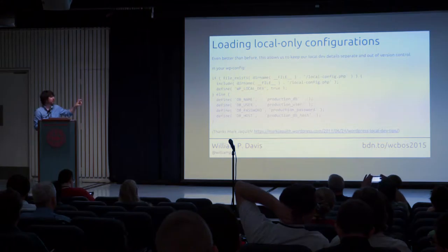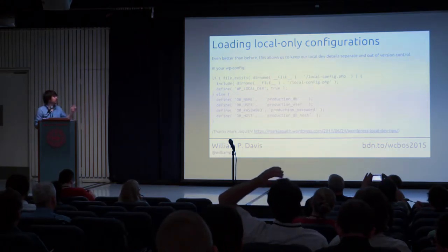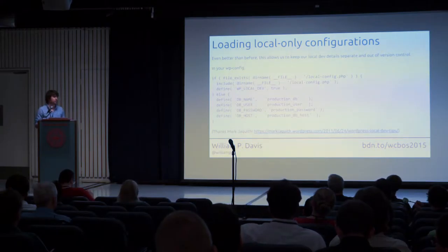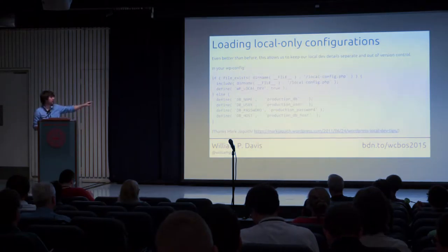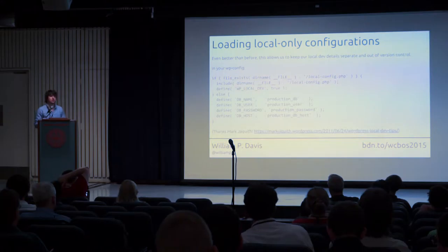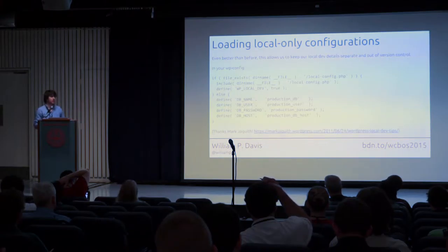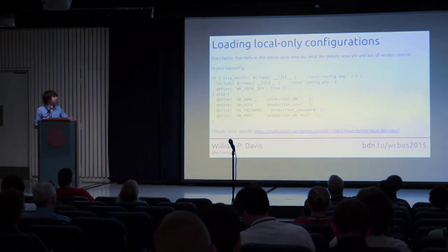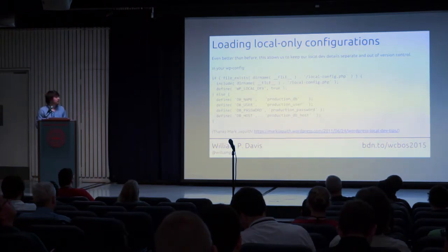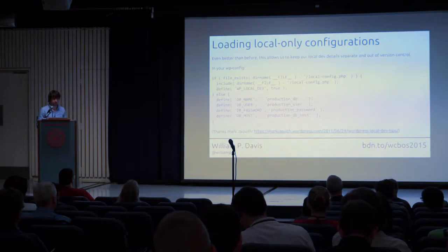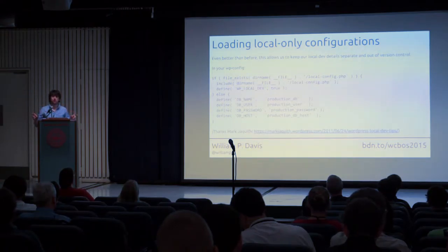You can put code in your wp-config that says: if we have a local config file, first of all, we are developing locally, so let's set that variable for use later on. In your local config file you can define your local staging database, turn on WP_DEBUG, and define any variables the way you want them to appear locally — while everything else stays in wp-config for production. I grabbed this from Mark Jaquith, one of the core developers who has done a lot of work on making things run easier locally.